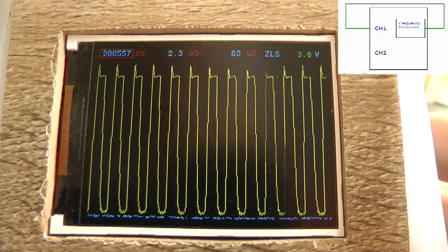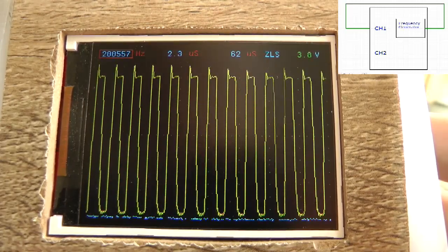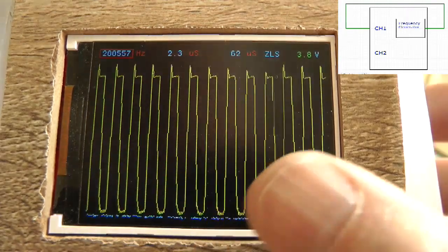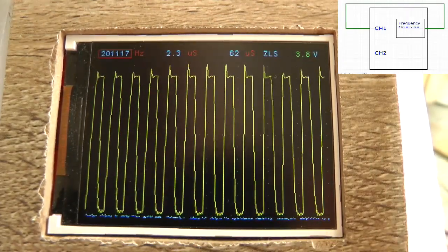The ADC is working at maximum sample rate. It's around 5 MHz, 5 MHz samples per second.